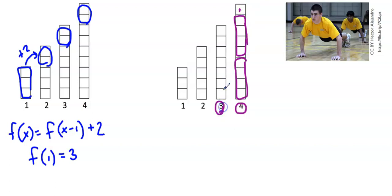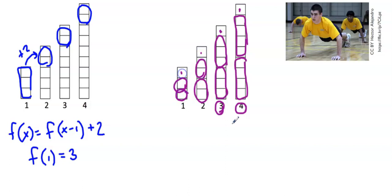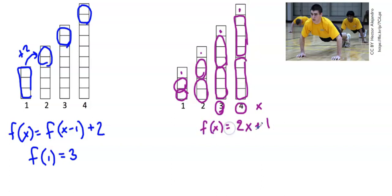Let's see if that works for the other days. For day three, I have one group of three, two groups of three, and then one extra — so two groups of the day number plus one extra. Same thing for day two: two groups of two and one extra. And for day one: two groups of one and one extra. So I have two groups of the day number, which we'll call x, plus one extra push-up.